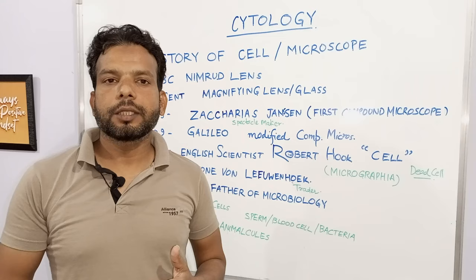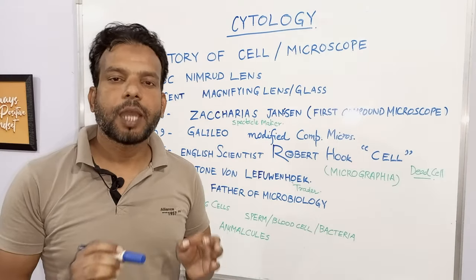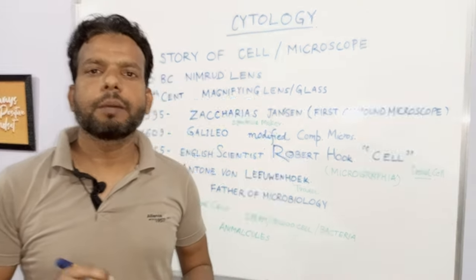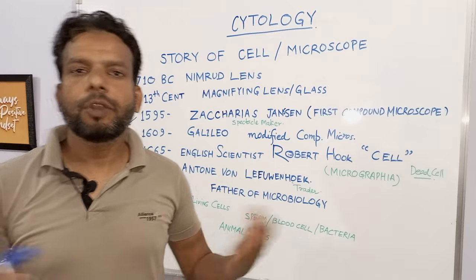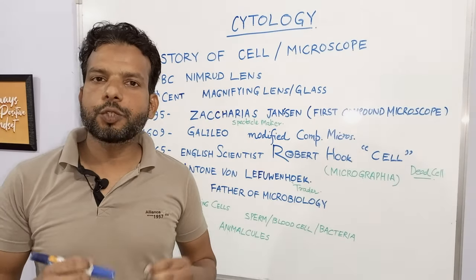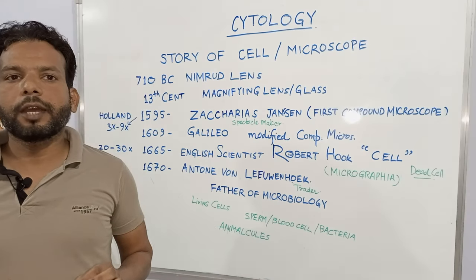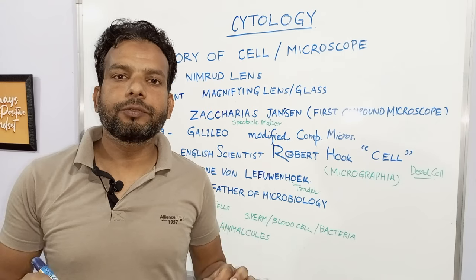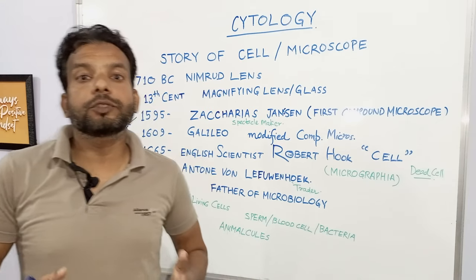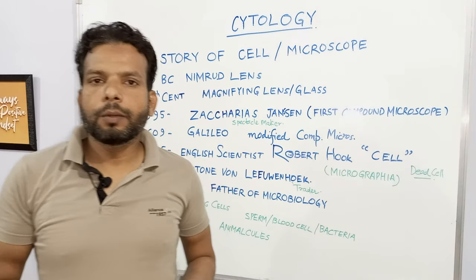The story of the cell truly begins in 1665, when a British scientist — who was a physicist, a chemist, a biologist, and a philosopher — published a book called Micrographia. In Micrographia, he made detailed drawings of multiple things which he had observed with his own developed microscope.